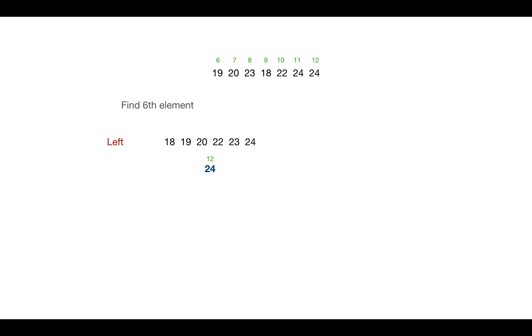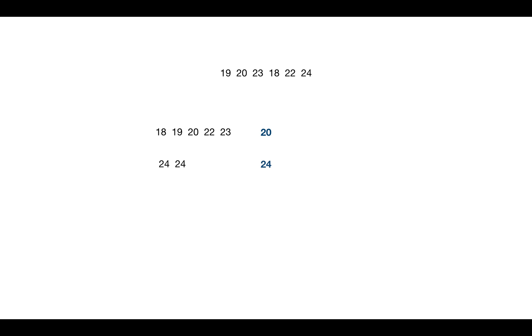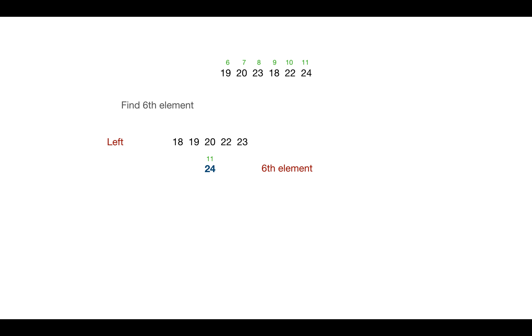We need to find the sixth element of this left subarray. We divide it into chunks of 5, get the median of medians — which is 24 — and use it as a pivot for one quicksort iteration. This places 24 at index 11, which is exactly the index we were searching for. The element at that index is the median we were looking for.